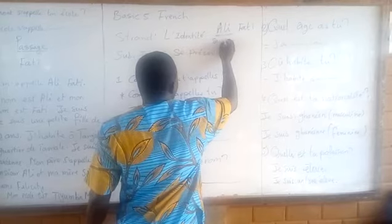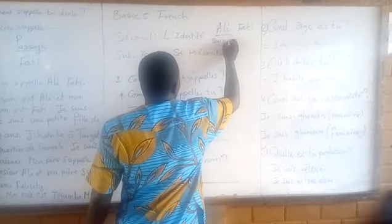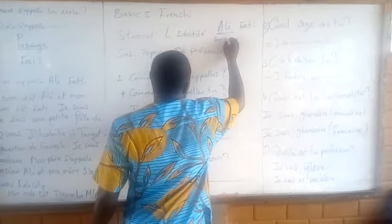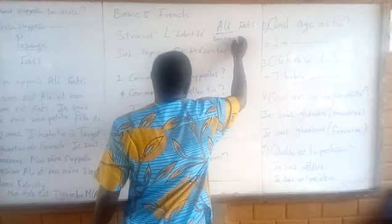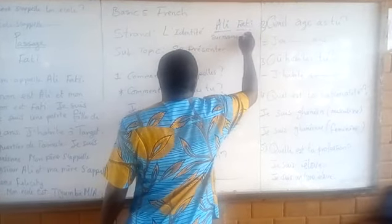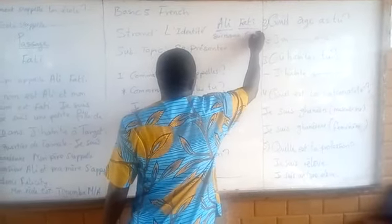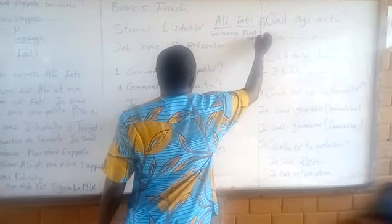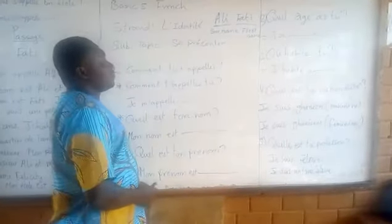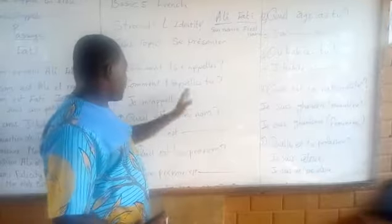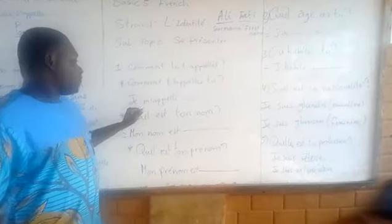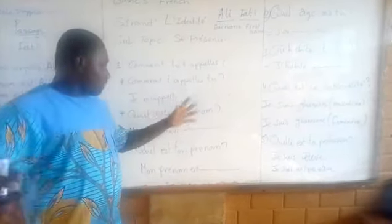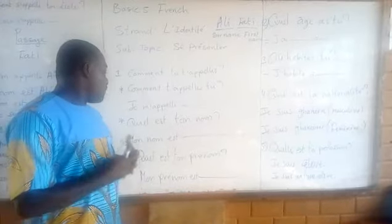So Ali Fati can say: 'Je m'appelle Ali Fati.' That gives us the full name. 'Je m'appelle' followed by your first name and family name.